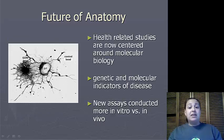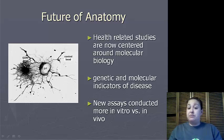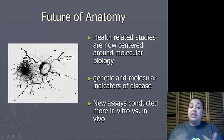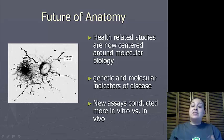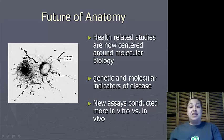Future anatomy, when looking into health-related studies, is now being centered around molecular biology. We are now looking at genetics and molecular indicators to show disease or correlations of disease. New assays are being conducted more in vitro, which is in the laboratory, versus in vivo, which is in living things.